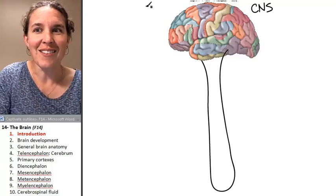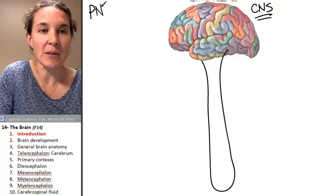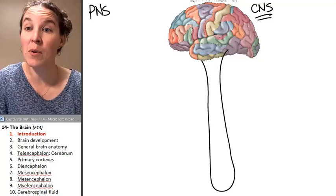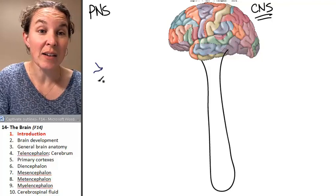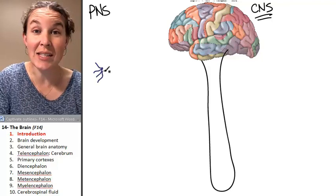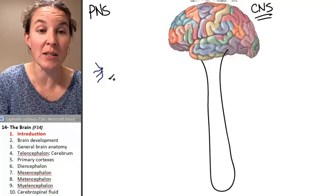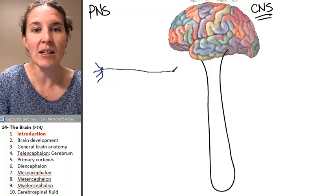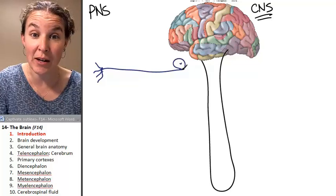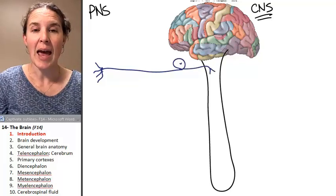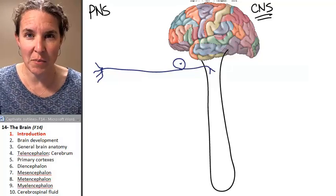Remember our drawings that included the central nervous system and the peripheral nervous system. Remember how we had sensory receptors receiving sensory information from the environment, and they transmitted that information to the spinal cord. And we have different flavors of sensory information.